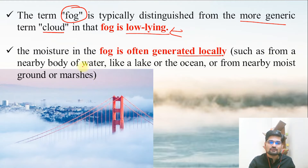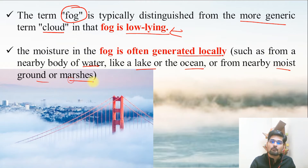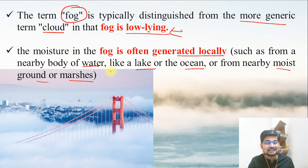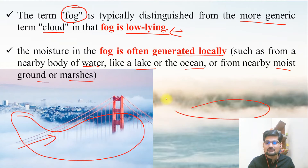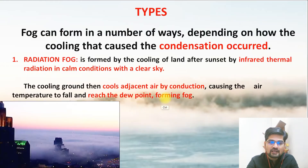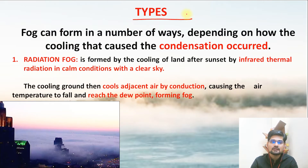Fog's moisture comes from local sources such as a nearby body of water like a lake or ocean, from nearby moist ground or marshes, or because of transpiration if lots of greenery is present. If you observe this particular area of Chicago, the entire area is covered with fog. This is how it looks. Furthermore, we have different types of fog to learn about.